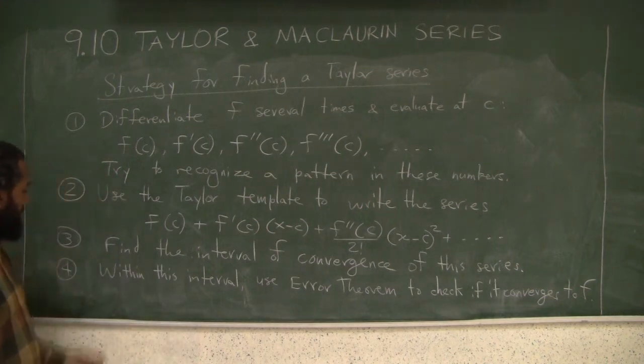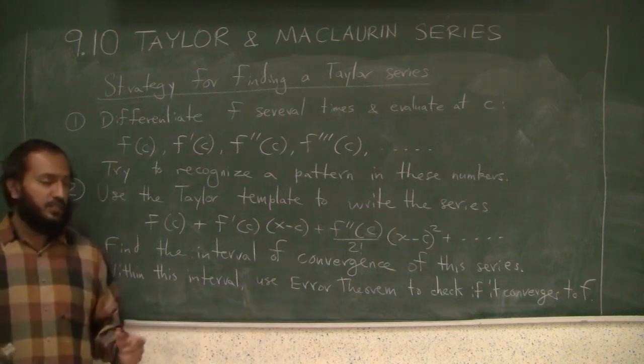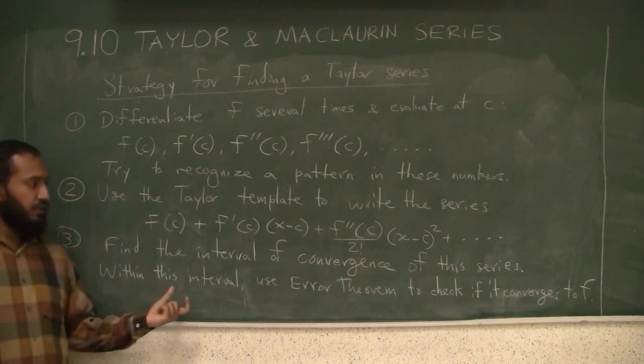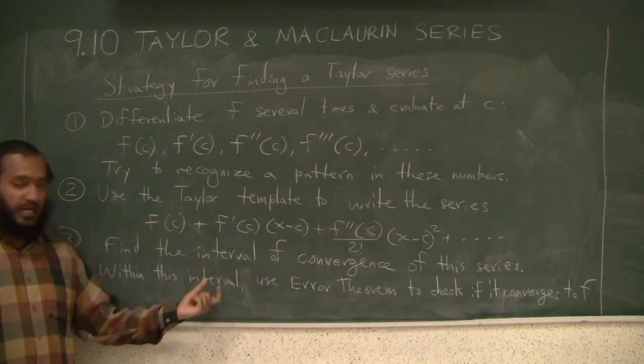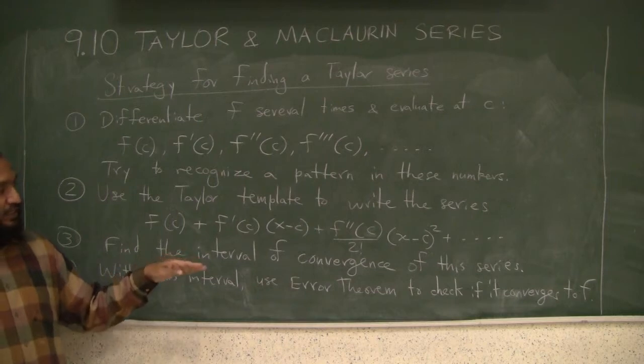Third step: find the interval of convergence of this series. Find where the series converges. Finally, within this interval it converges, it doesn't mean it has to converge to f. Use the error theorem to see if the nth error goes to zero to check if it indeed converges to f.